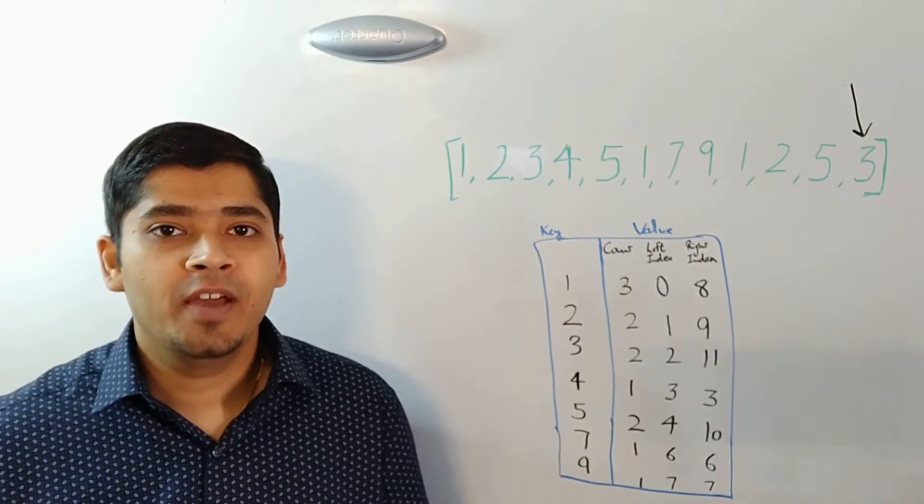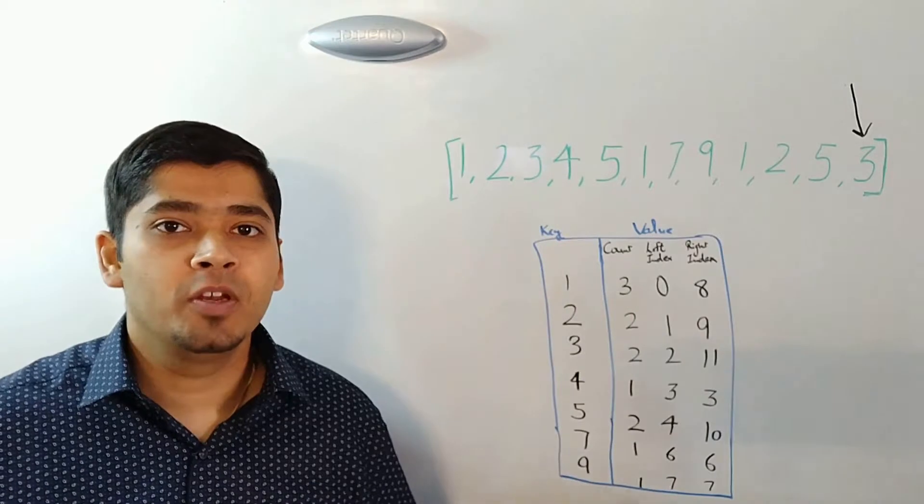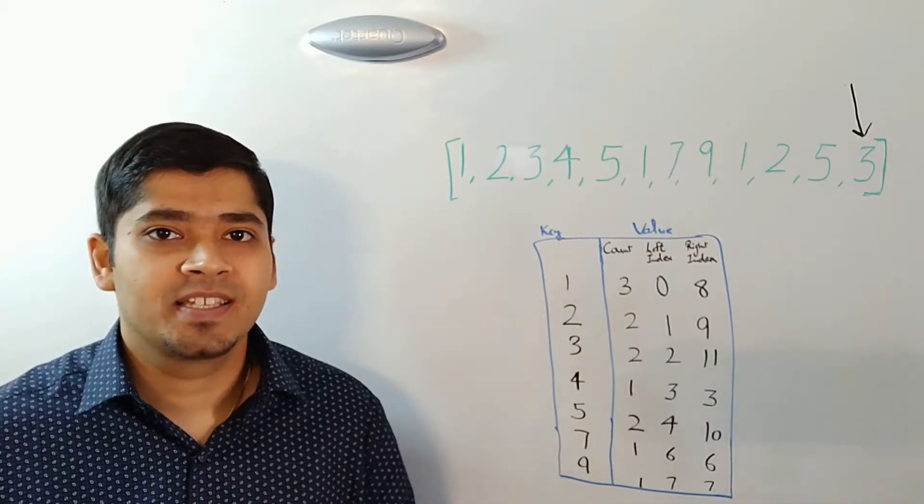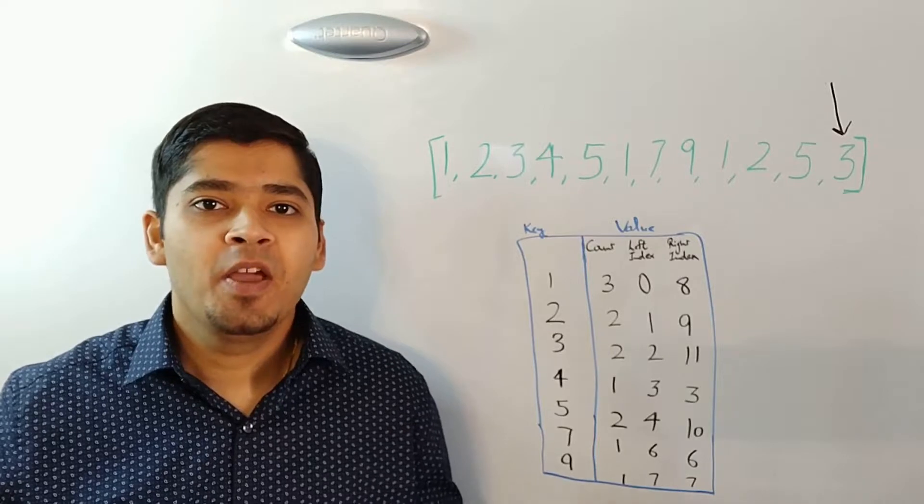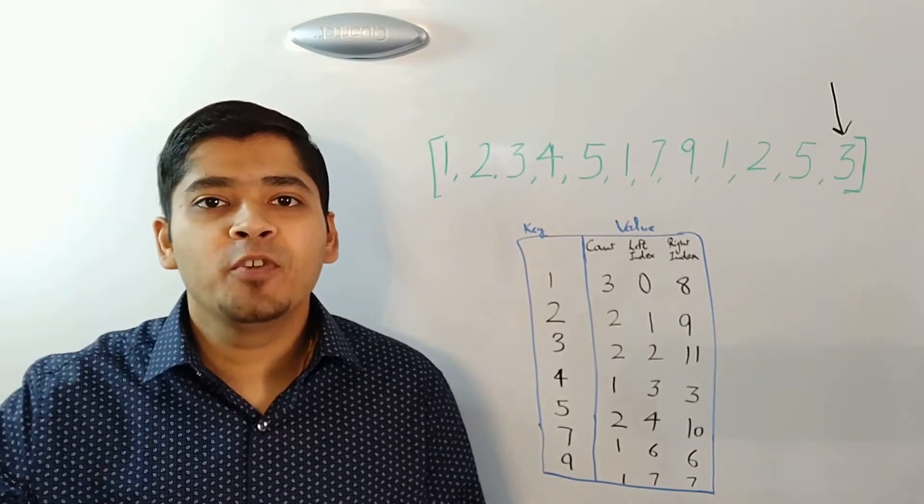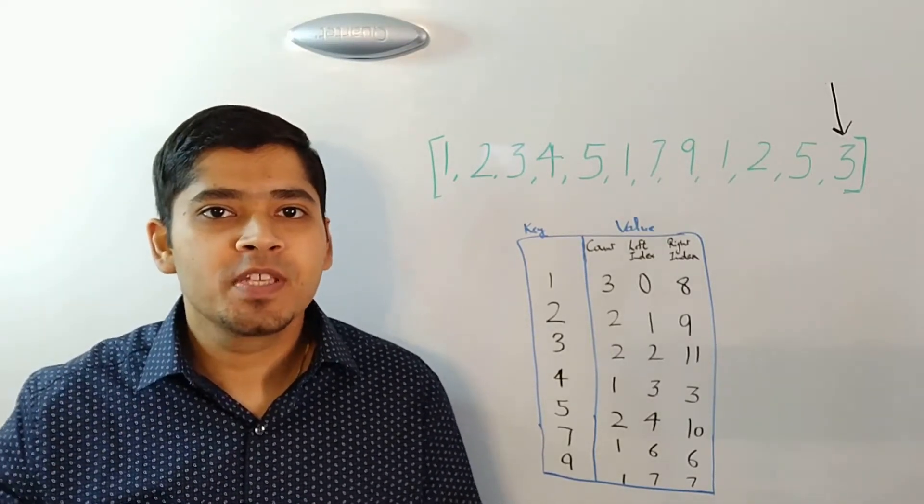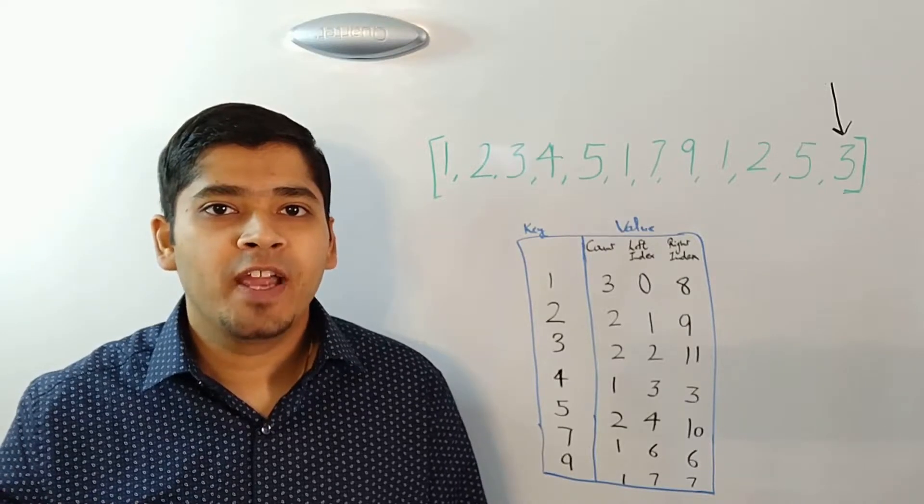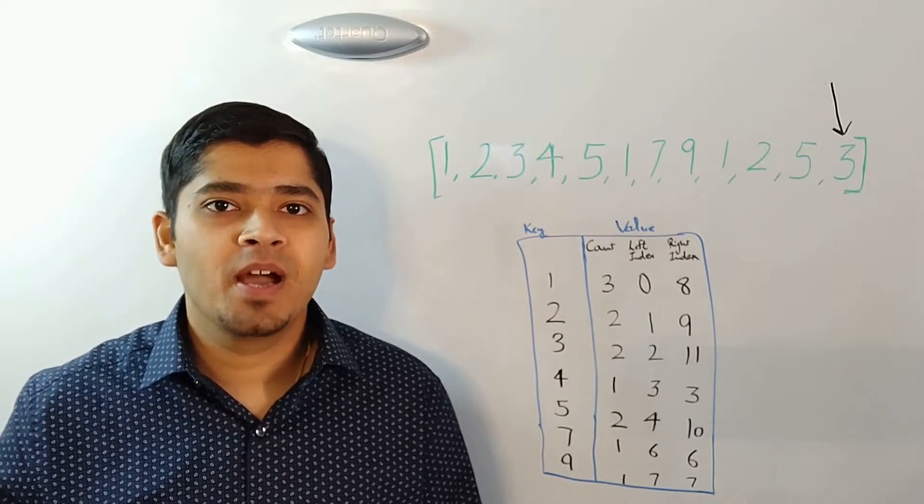So what do we have? Our hash map will look something like this. So once our hash map is ready, what we have to do is we have to loop through all the values in the hash map and find the value with maximum count.